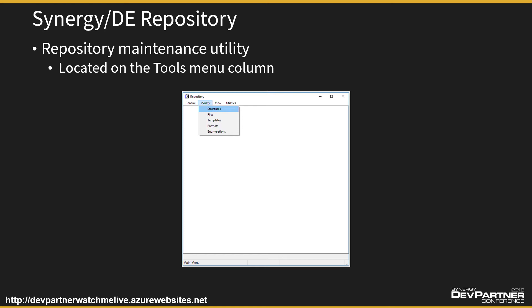You should always run the repository directly from within Visual Studio — that will ensure you're looking at the right repository files for that project, that solution, and that development environment. The Synergy repository is found on the Tools menu inside Visual Studio. The repository is a very simple UI Toolkit interface. You can modify things, view things, and run a few utilities. For the workshop today we'll be modifying structures and using options from the Utilities menu to generate our repository schemas.